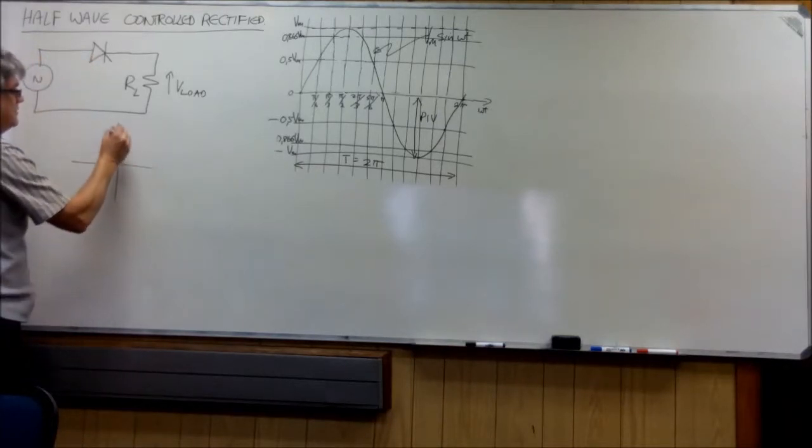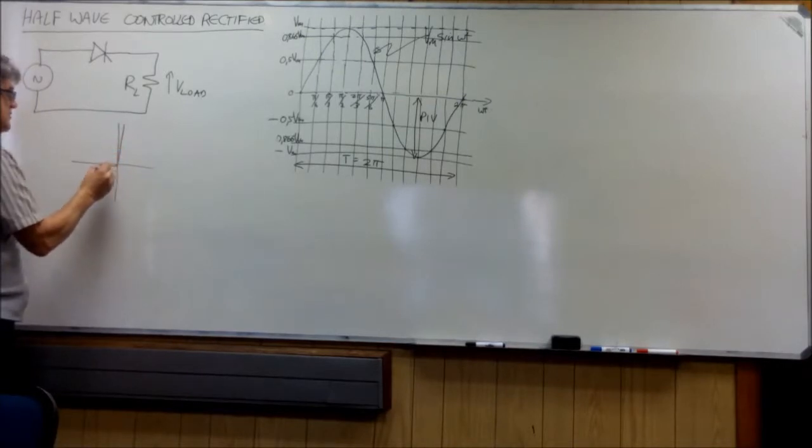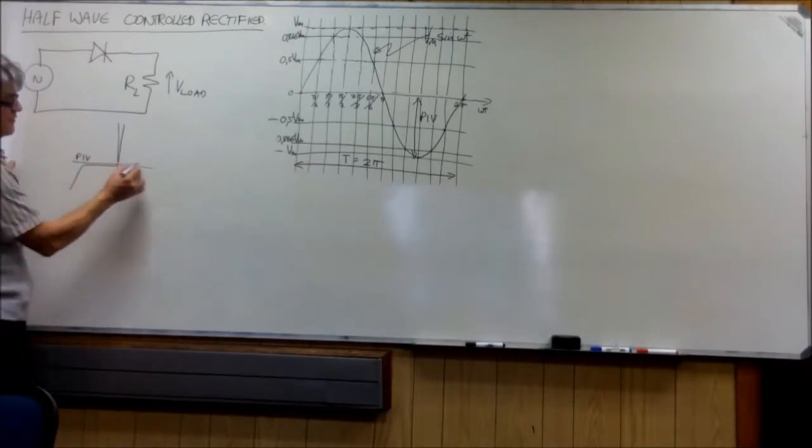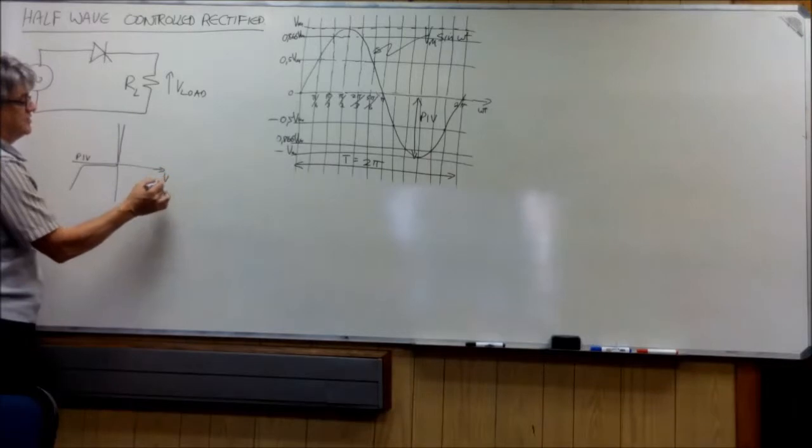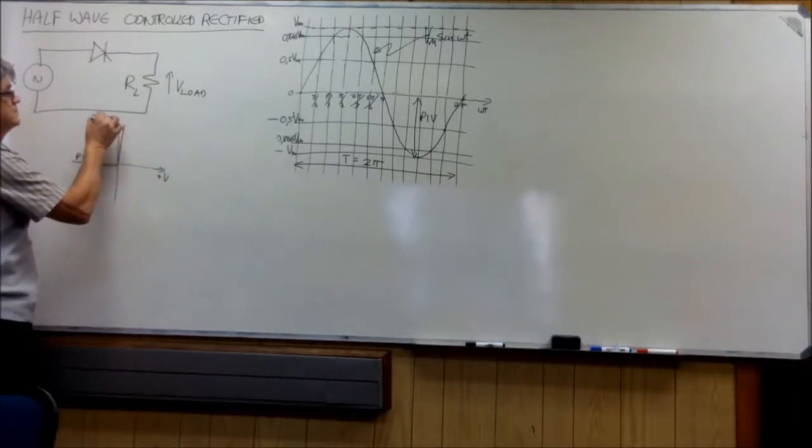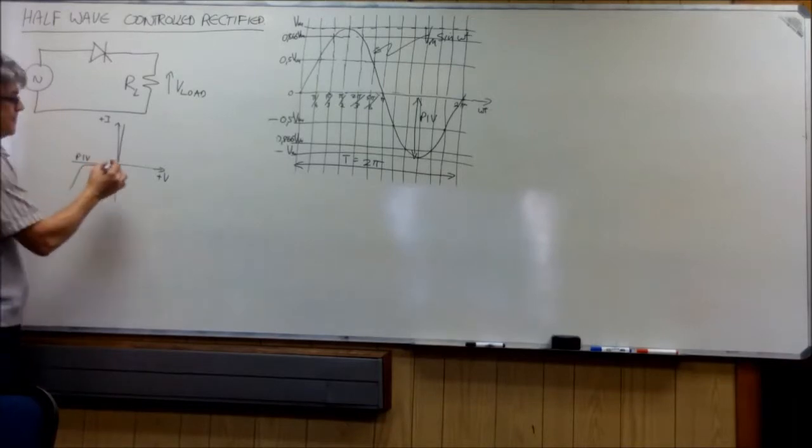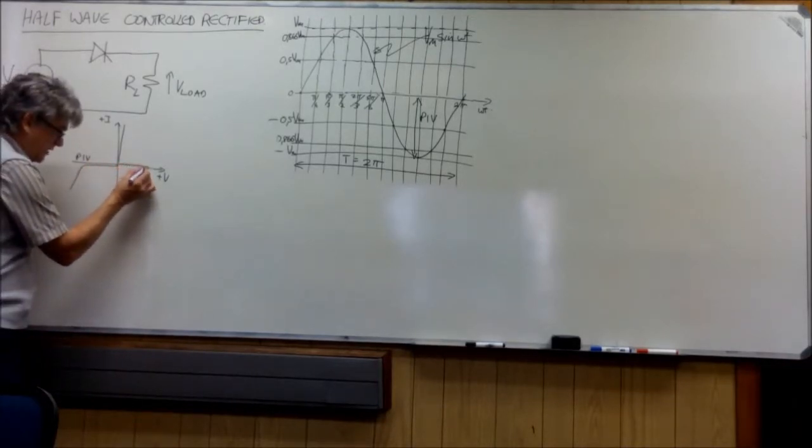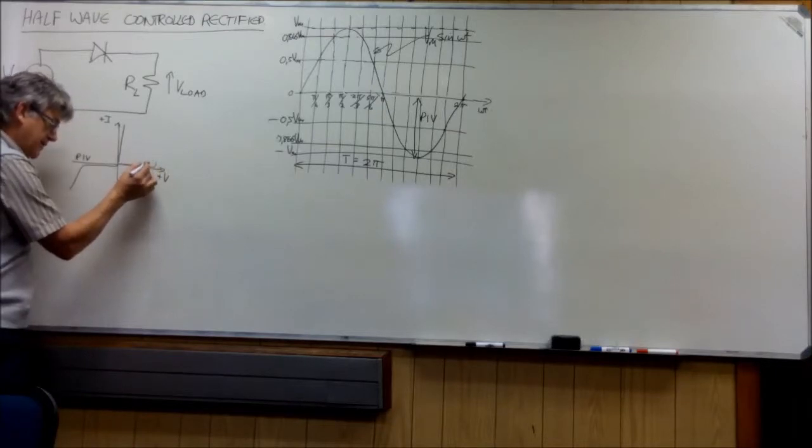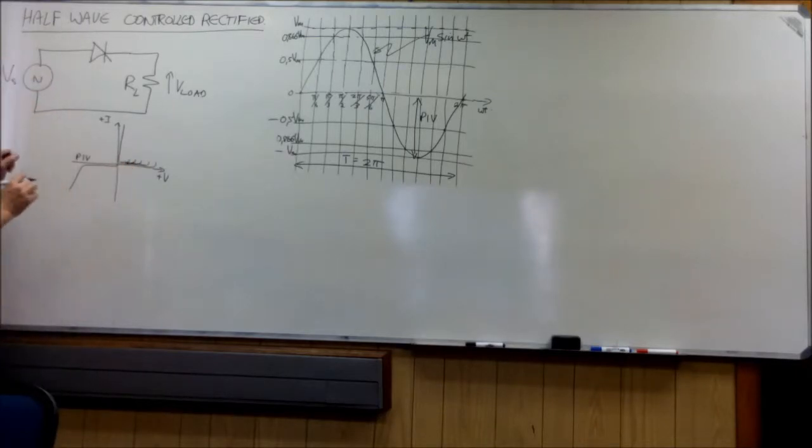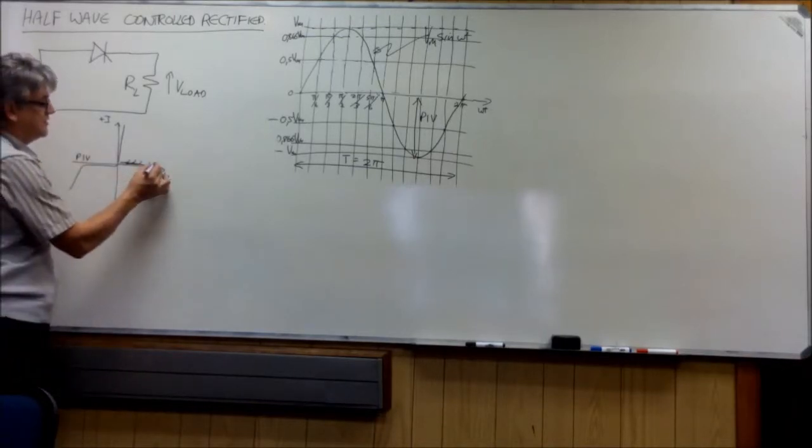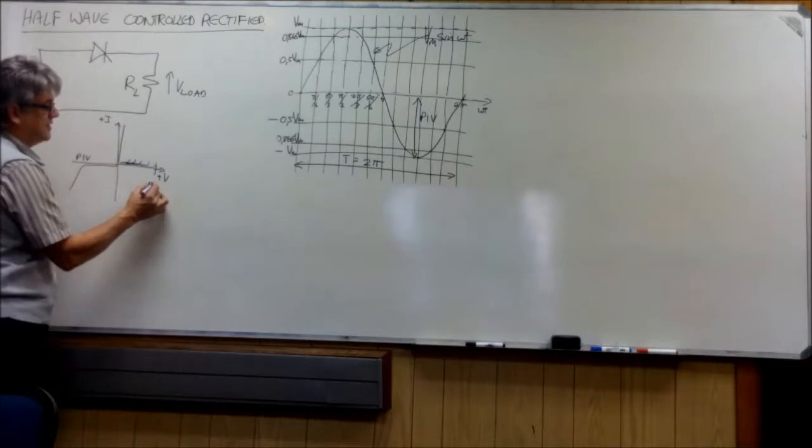its characteristic curve looks very much like that of a diode except for in the forward voltage region. In the forward voltage region, it has a forward blocking region. And depending on what the forward breakover, again this voltage is called the forward breakover voltage.